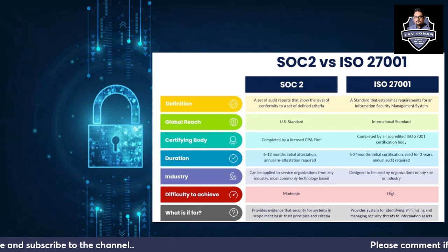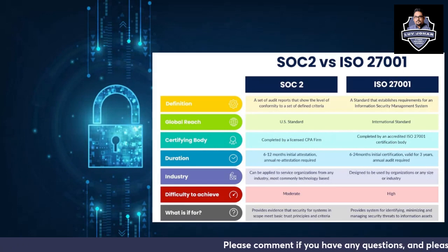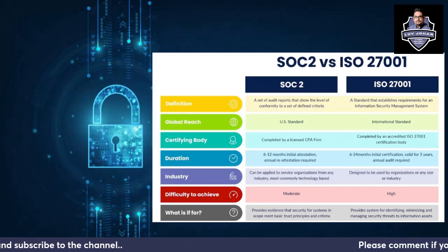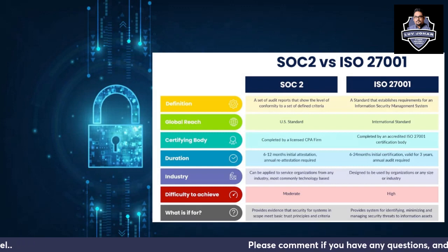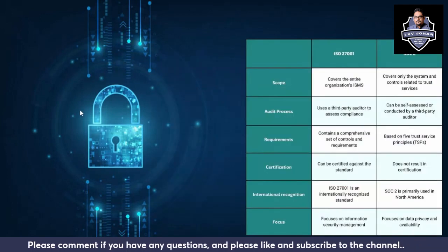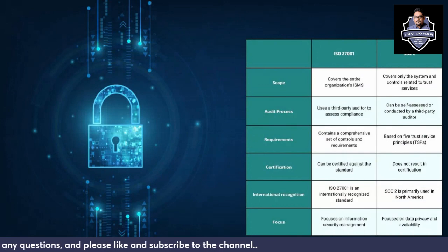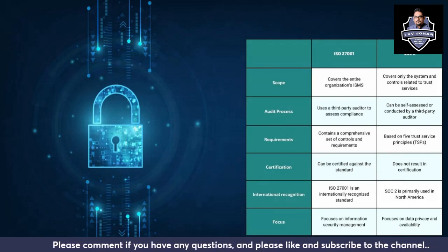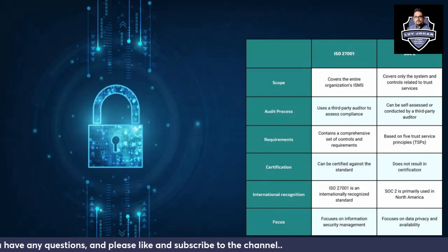SOC 2 is most commonly used by technology-based service organizations, while ISO 27001 applies to any industry. Difficulty to achieve ISO 27001 is very high. SOC 2 provides evidence and security for systems in scope based on Trust Services Principles and criteria, while ISO 27001 provides a system for identifying, minimizing, and managing security risks to information assets. ISO 27001 covers the entire ISMS; SOC 2 covers only systems and controls related to Trust Services Principles.